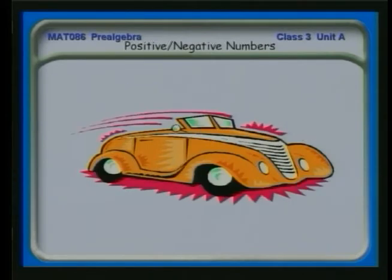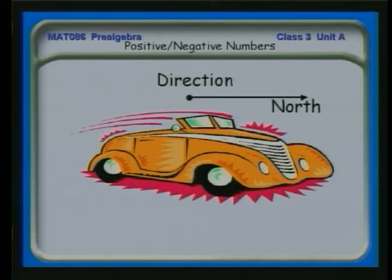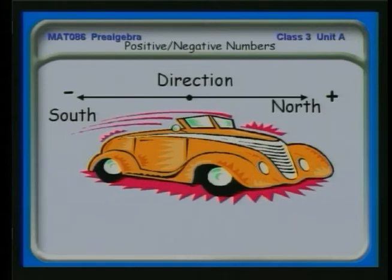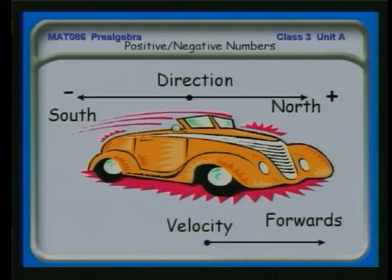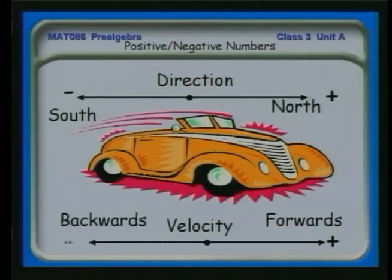When we talk about motion, we also have to talk about direction. So we can go north and south. If we go north, we're going in a positive direction. If we go south, we're going in a negative direction. Velocity: if you're going forwards, moving towards something, you say you're going in the positive direction. If you're backing up, moving backwards, you can say you're going in the negative direction.